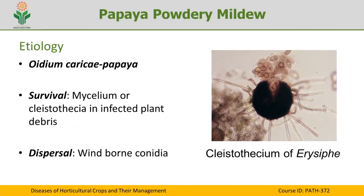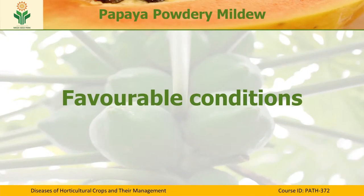If the cleistothecial stage is produced, the ascospores are capable of inciting the primary infection. If the conidial stage helps in survival, the conidia serve as the source of primary inoculum. The secondary inoculum consists of wind-borne conidia — these conidia are produced in favorable conditions and are disseminated through the wind, capable of causing secondary infections.